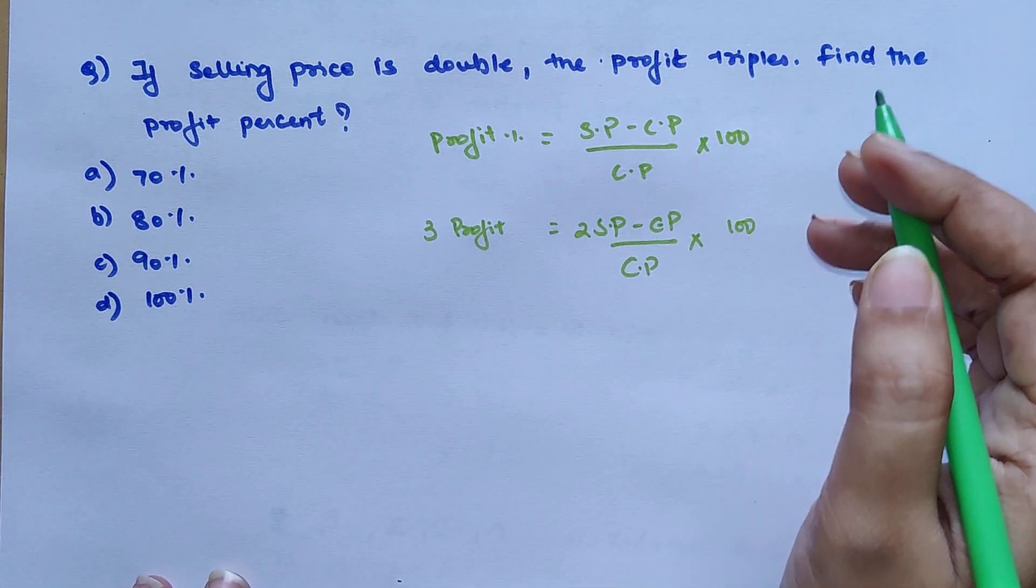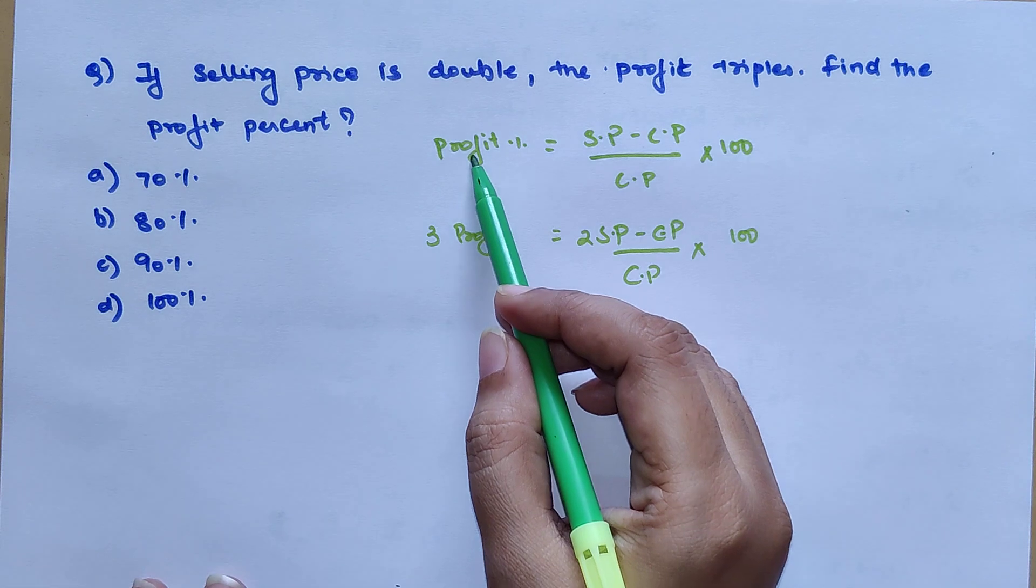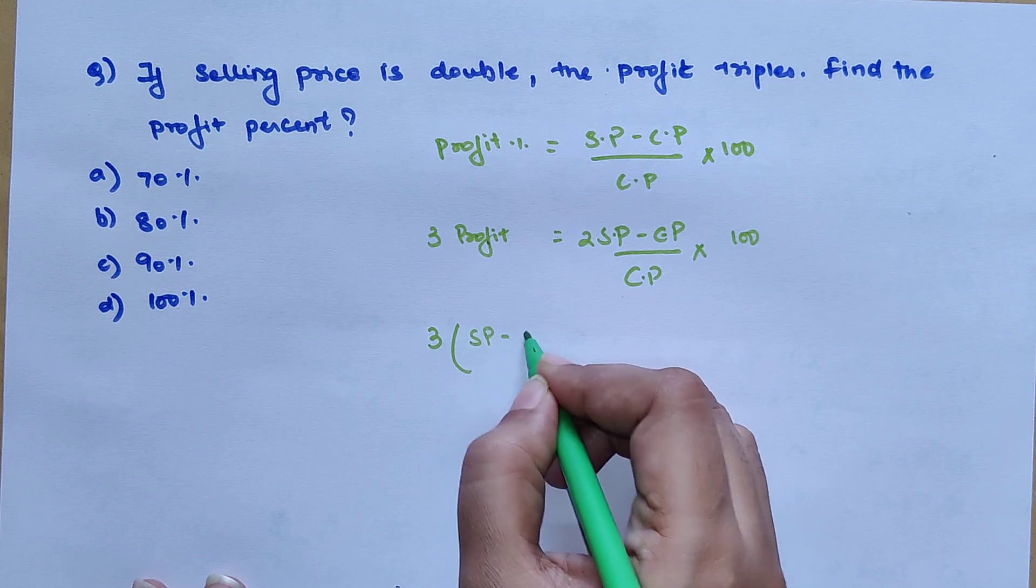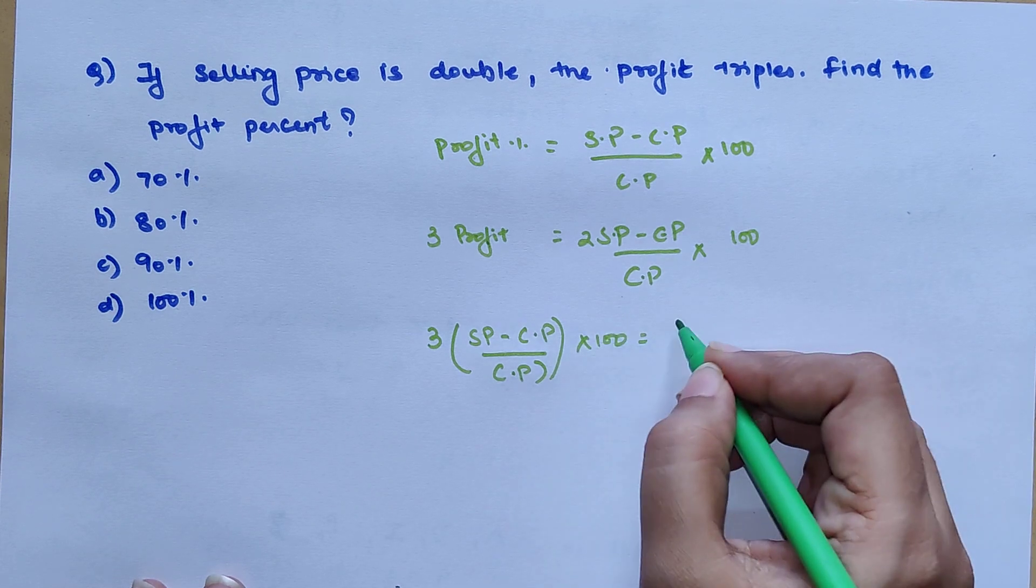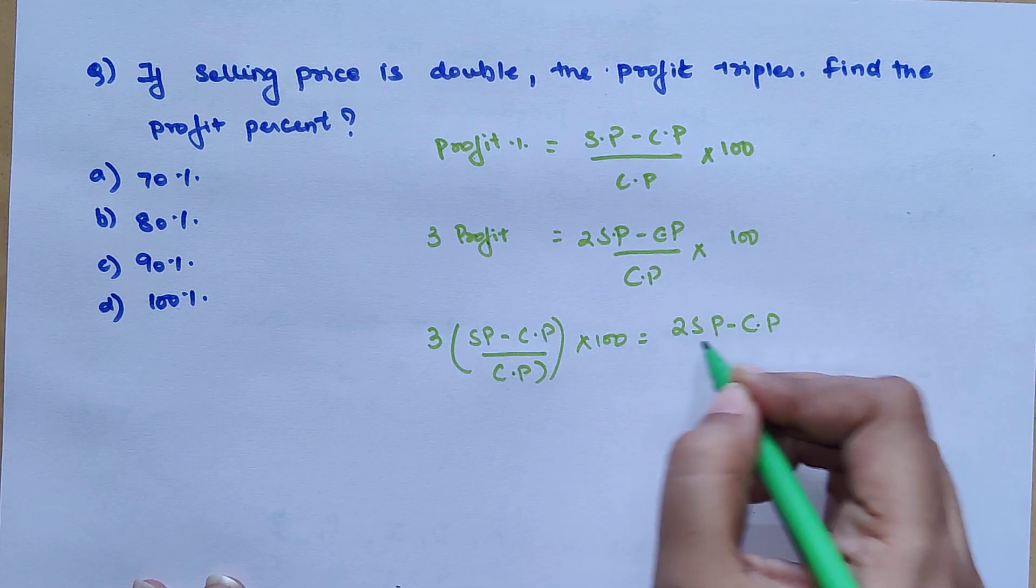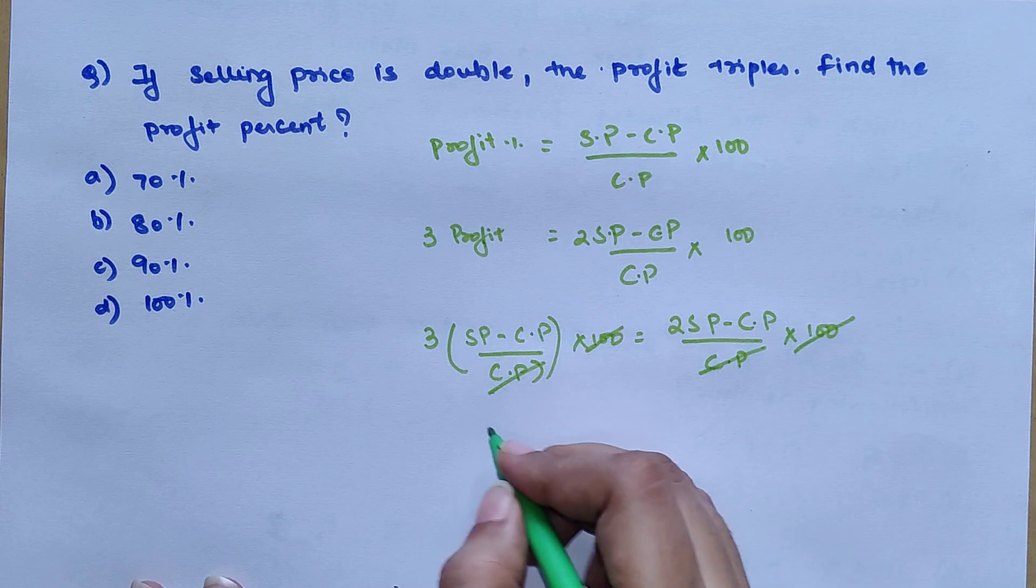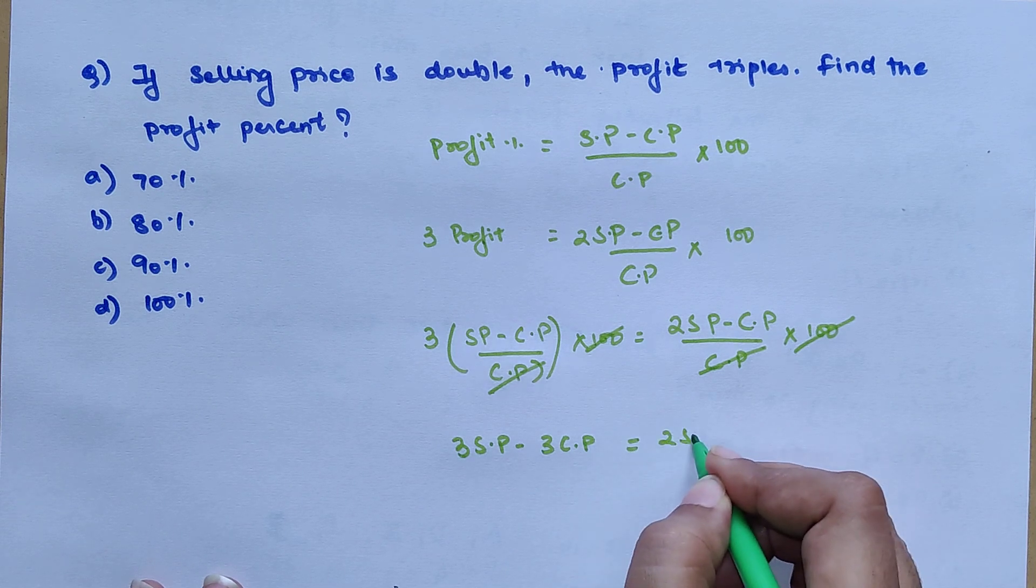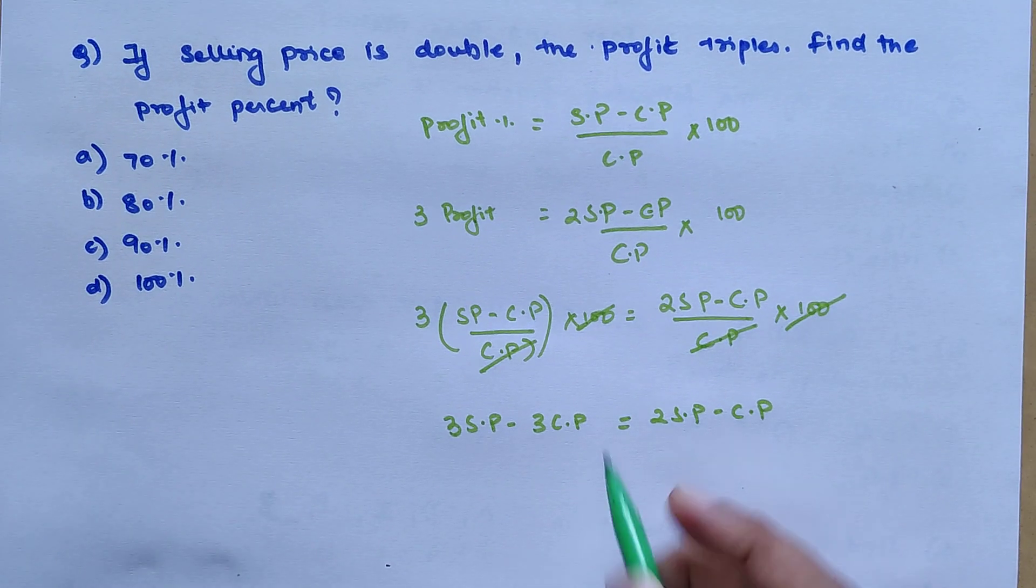Let's substitute profit percentage in this. We have 3 into, instead of profit we write SP minus CP upon CP into 100, is equals to 2 SP minus CP upon CP into 100. The hundreds are cancelling, denominators are the same so they are also cancelling. So we can now say 3 SP minus 3 CP is equals to 2 SP minus CP.